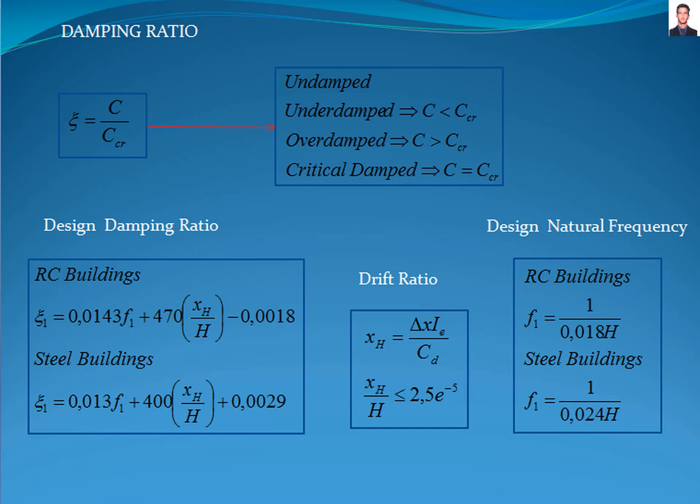The damping ratio is the relationship between the damping coefficient and the critical damping, given by the equation ζ = C/CCR.